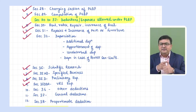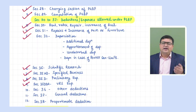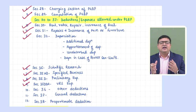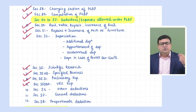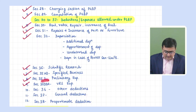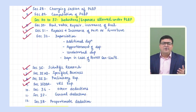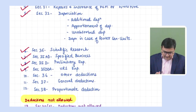Section 35AD — if the assessee follows the default scheme, 35AD relates to capital expenditure (except land, financial instruments, and goodwill) on specified businesses. There are 14 types of specified businesses; 100% deduction is allowed. If the asset purchased for specified business is transferred within 8 years, the earlier deduction becomes PGBP income — but deemed depreciation should also be considered. Section 35D covers preliminary expenses and 35DDA covers VRS, both allowed in five equal installments.